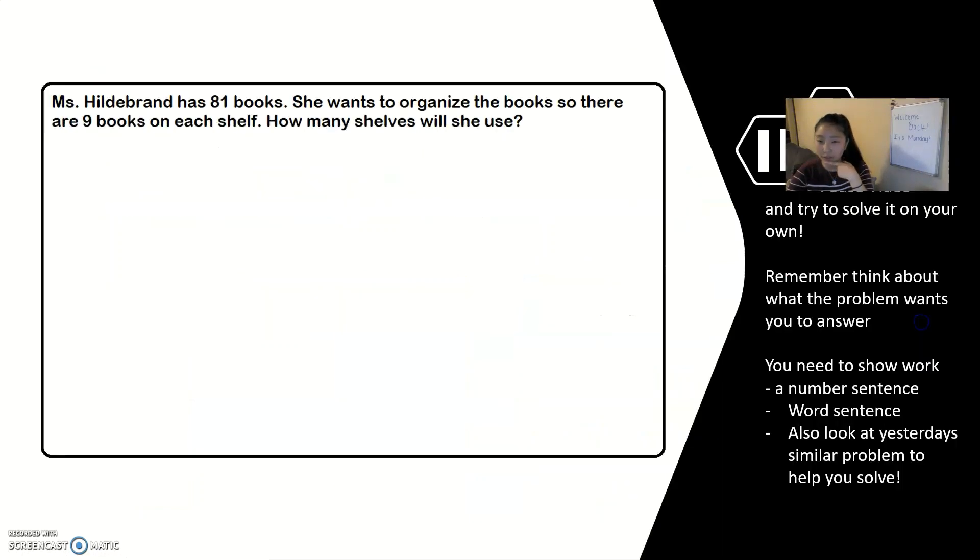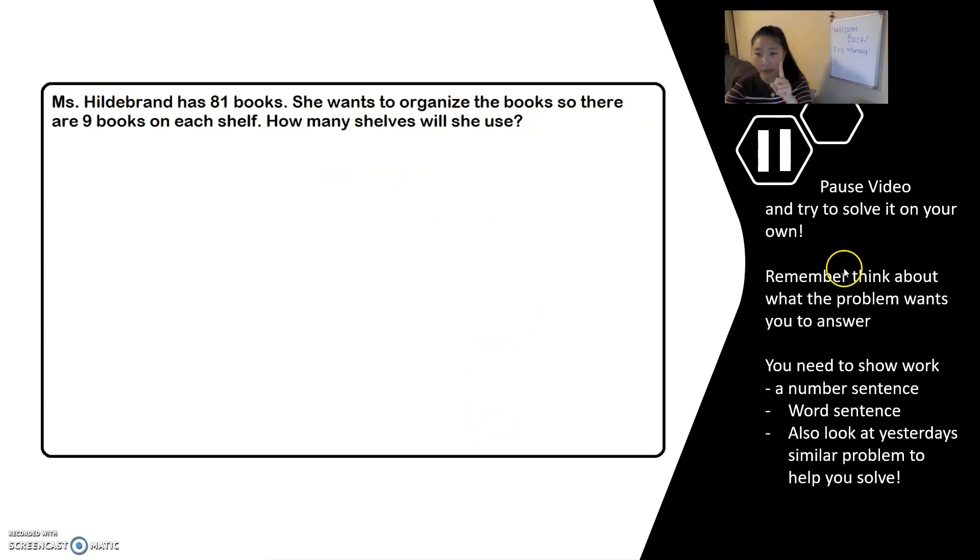And now I want you to go and try to solve. You're going to pause this video and solve this on your own. Remember what the problem wants you to answer. You will need a piece of paper and a pen. And I want you to solve it out in at least one way, maybe two. Try to get creative. Think about what you have. If you have 81 books, maybe you can even use books. It's a lot of books, which you would need to clean up with. You need a number sentence, a word sentence. And it kind of looks like the problem from before as well. So maybe that can help you. I'm going to show you three different ways that I solved it afterwards. You ready? Alright, go.